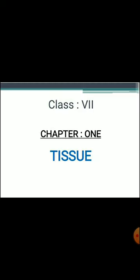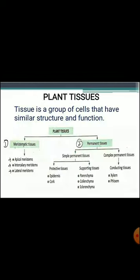In today's video we are going to discuss plant tissues. As we already know, a tissue is a group of cells that have similar structure and function. Plant tissues are mainly divided into two types: meristematic tissue and permanent tissue.